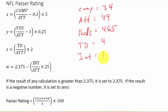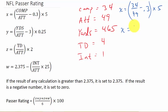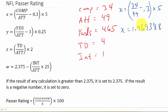First we calculate X. X equals the number of completions over attempts: 34 over 49, minus 0.3, and then all of that times 5. Punching that in gives us our X value.